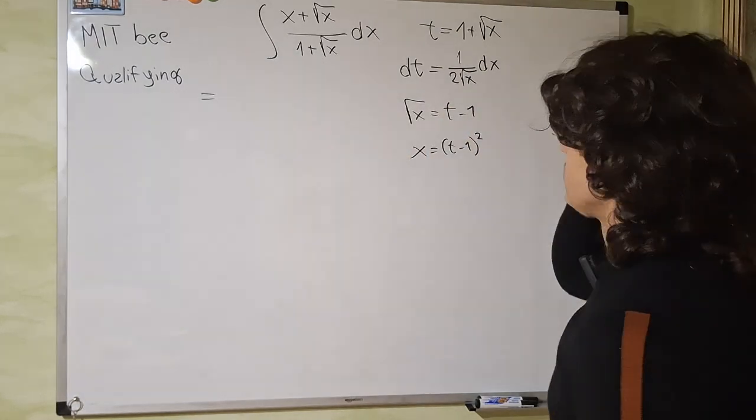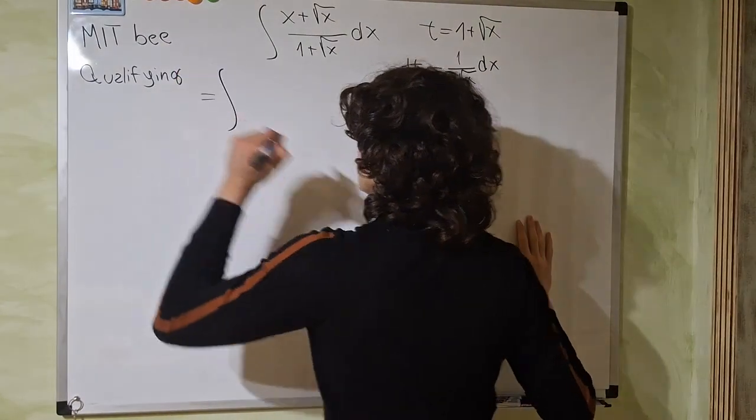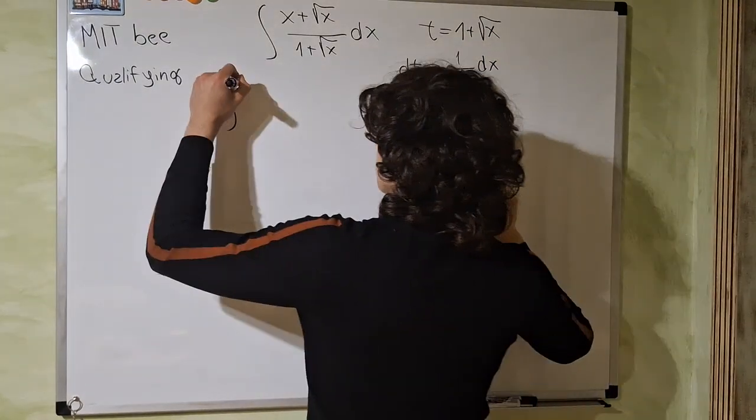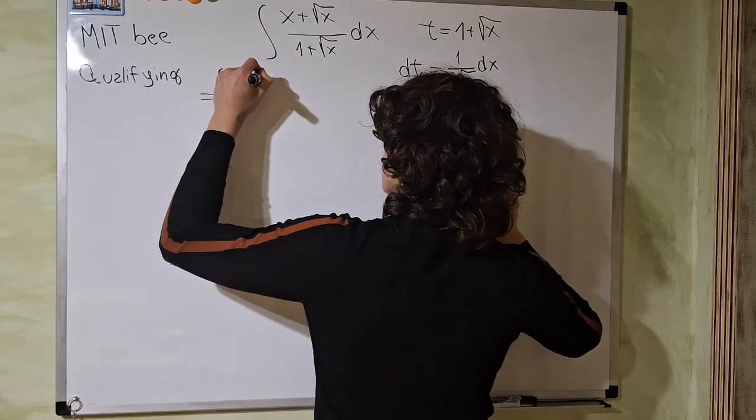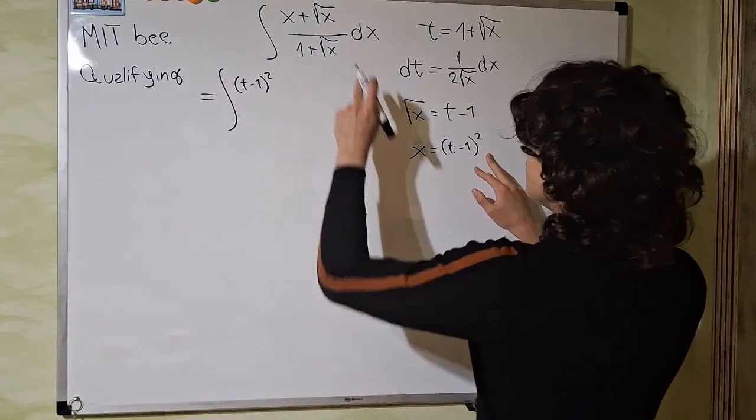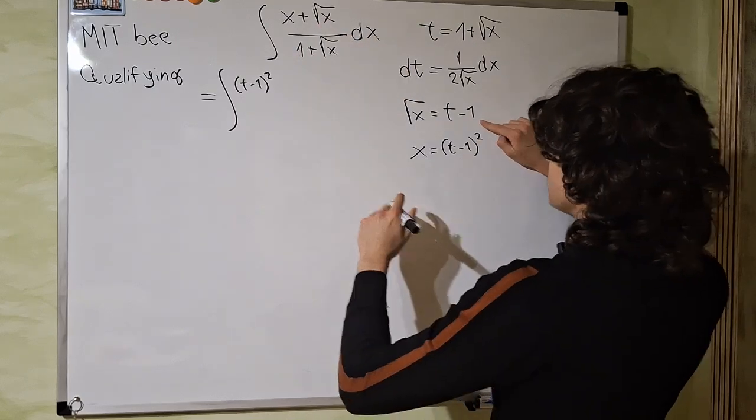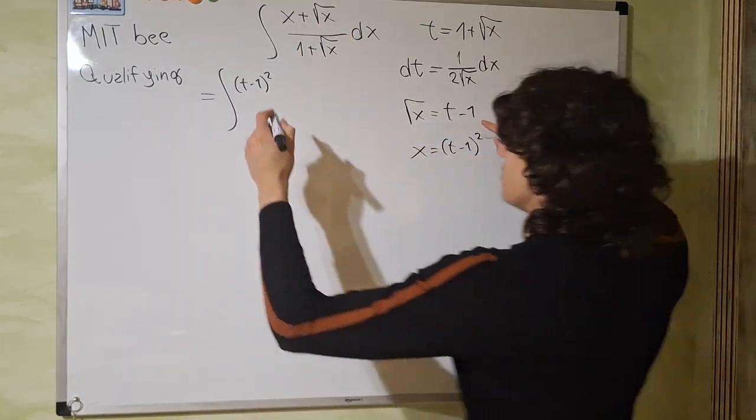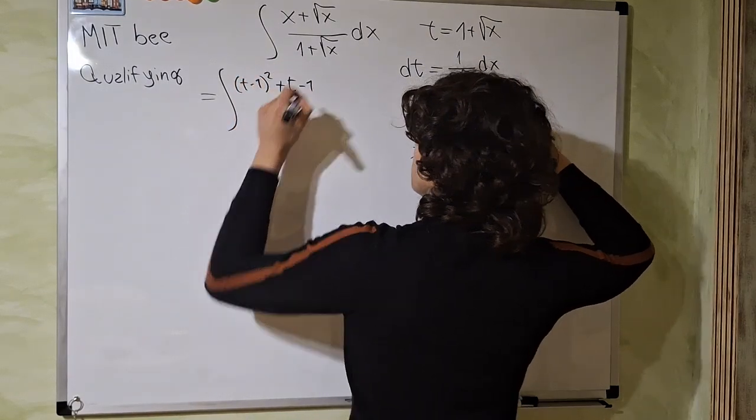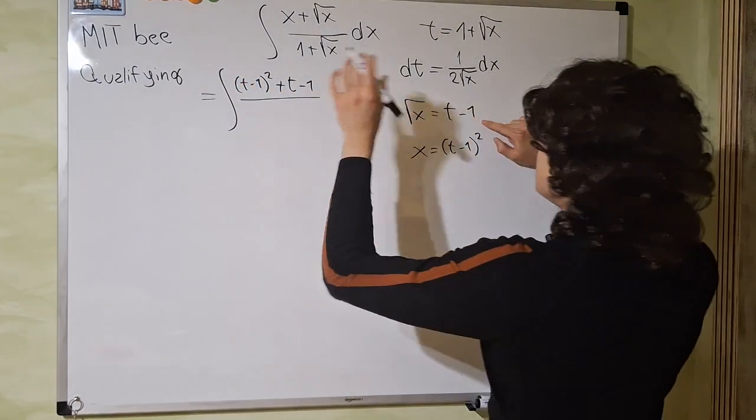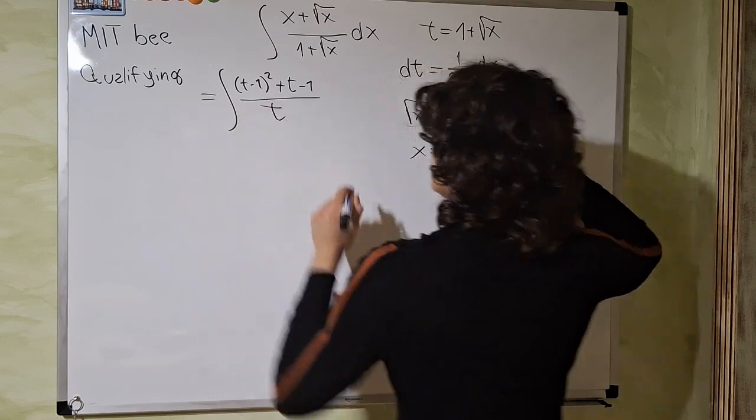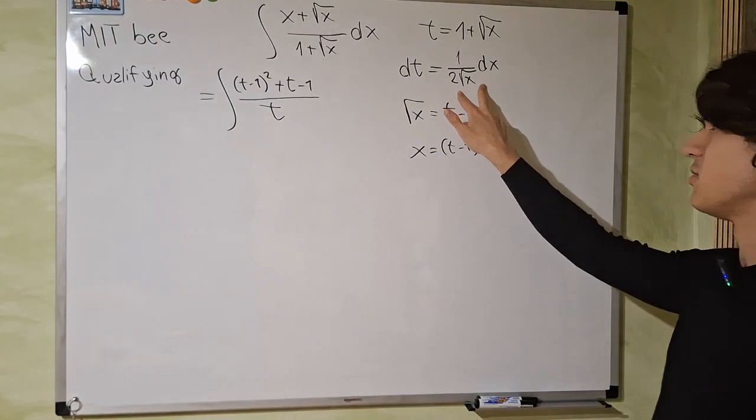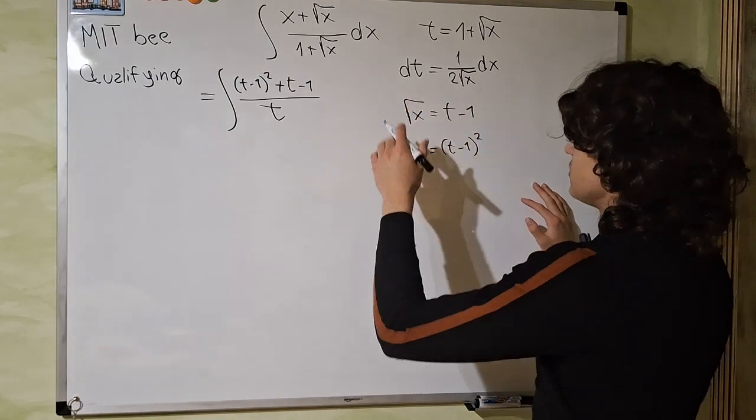Now we can replace everything into the integral here. So we have our nice integral, the x we replace it by t minus 1 squared. Then we have plus the square root of x. The square root of x is nothing but t minus 1. So just plus t minus 1 divided by t. And we replace the dx with 2 times square root of x dt.